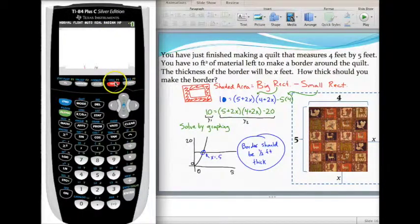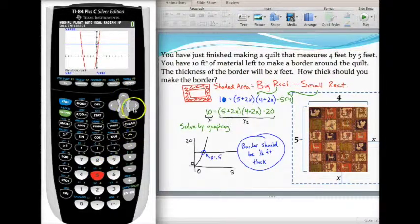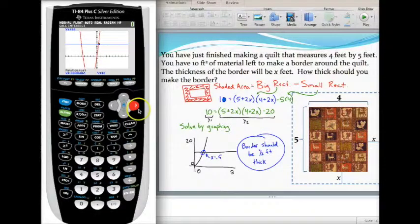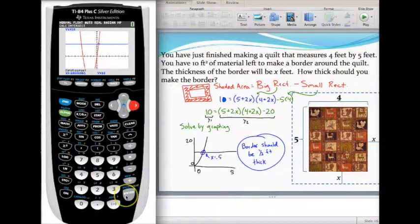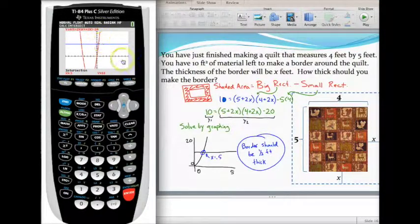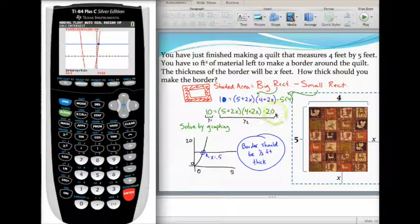So hit second and trace. Select option five, intersect. And just make sure your cursor is closer to this one. Because if you just press enter three times, it'll pick the closer one. So I'm closer to that one. Press enter three times to answer the three questions. And it will calculate the intersection point for you. That's 0.5, not five. So I'm adding a 0.5, a half foot border to my quilt to get this to work out. I could also, I guess, say six inches. But a half foot border is going to be the width of the border that I want to add to this quilt.